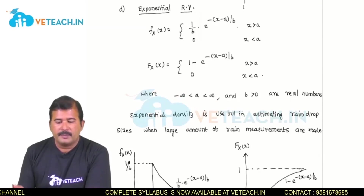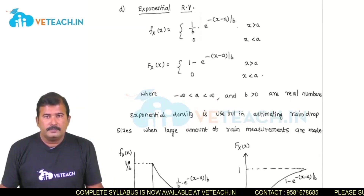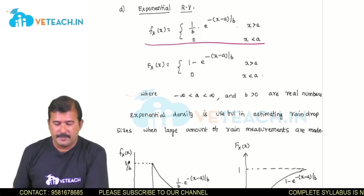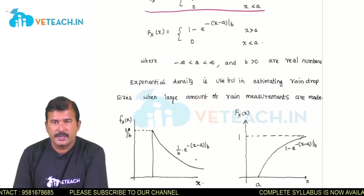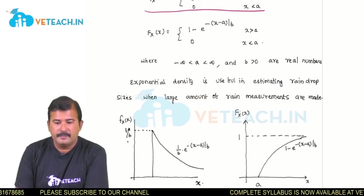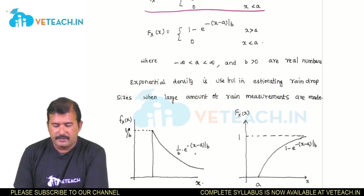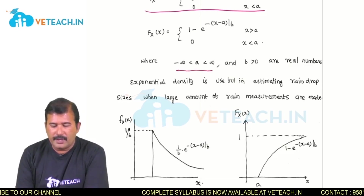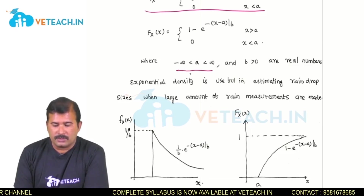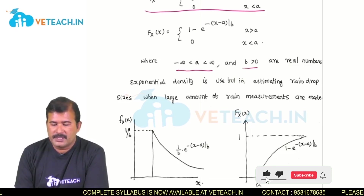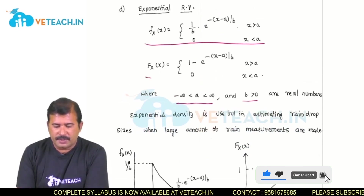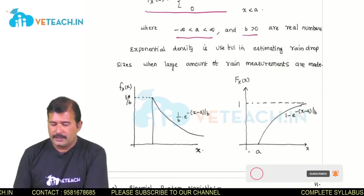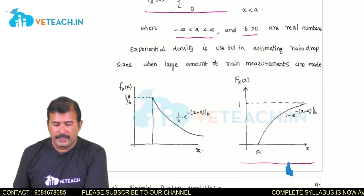The next random variable is the exponential random variable, useful in measurements such as rainfall amounts. Its density function is 1 by b into e power minus of x minus a by b, which is an exponentially decreasing function with maximum value 1 by b. Here a can range from minus infinity to infinity, but b is a positive constant. The corresponding distribution function is 1 minus e power minus of x minus a by b for x greater than a, and 0 for x less than a.